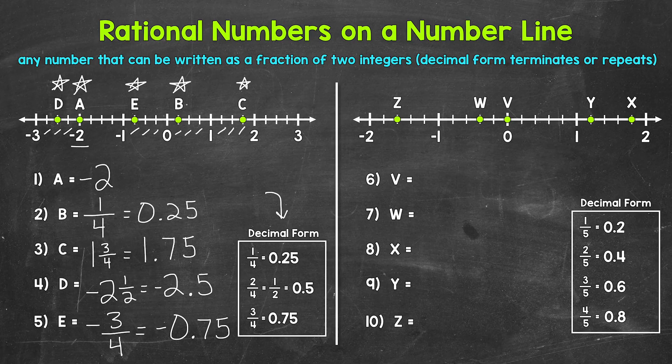Let's move on to numbers six through ten, where we'll be working with a different number line. Starting at zero and going to the right, it looks like we have fifths here — one fifth, two fifths, three fifths, four fifths, one, and so on. Moving to the left, we have negative one fifth, negative two fifths, negative three fifths, negative four fifths, negative one, and so on.